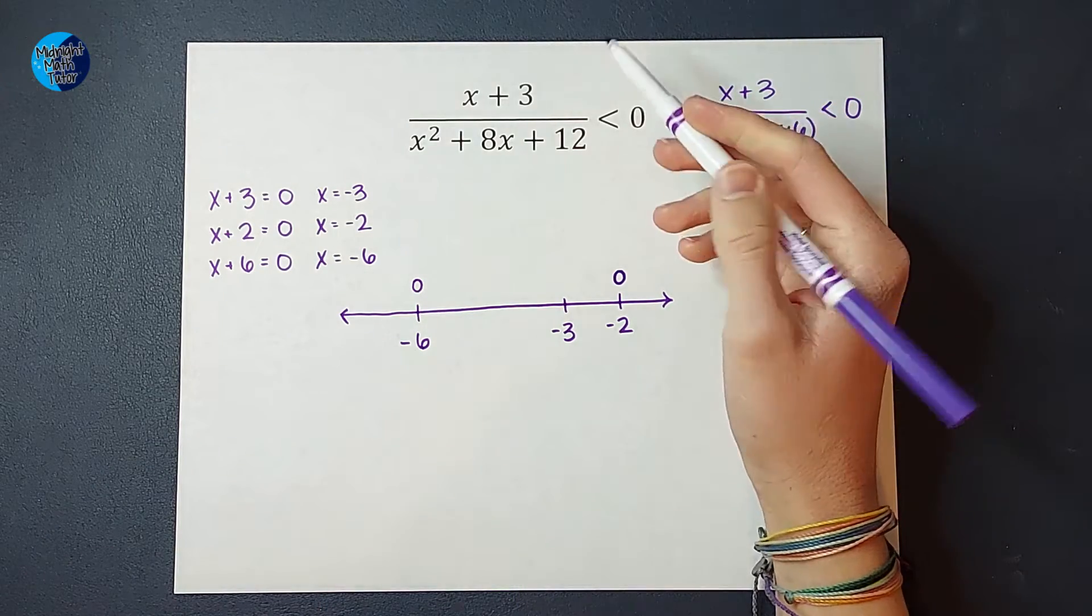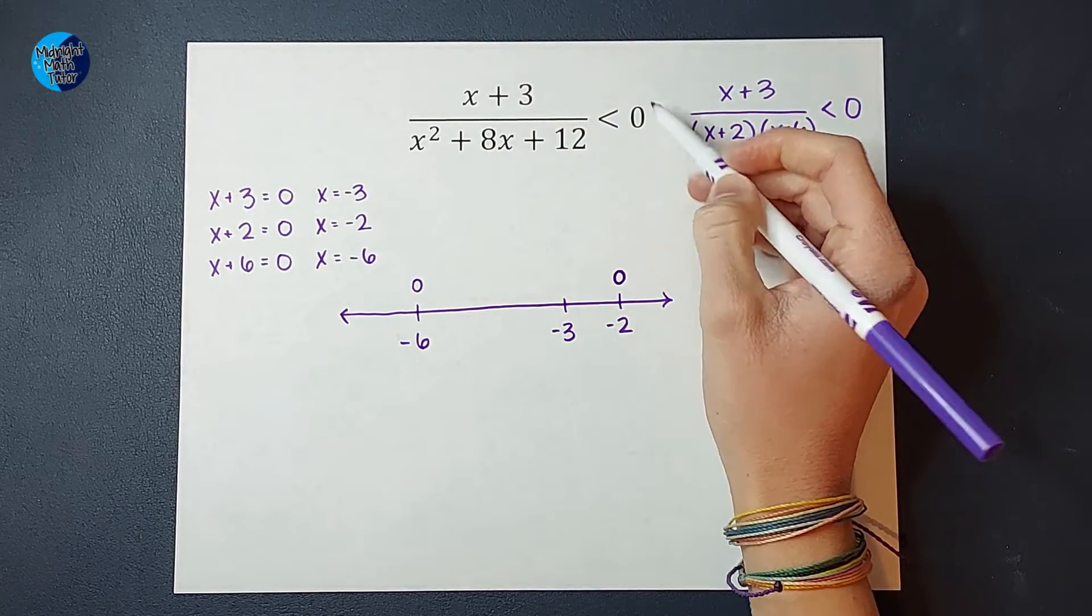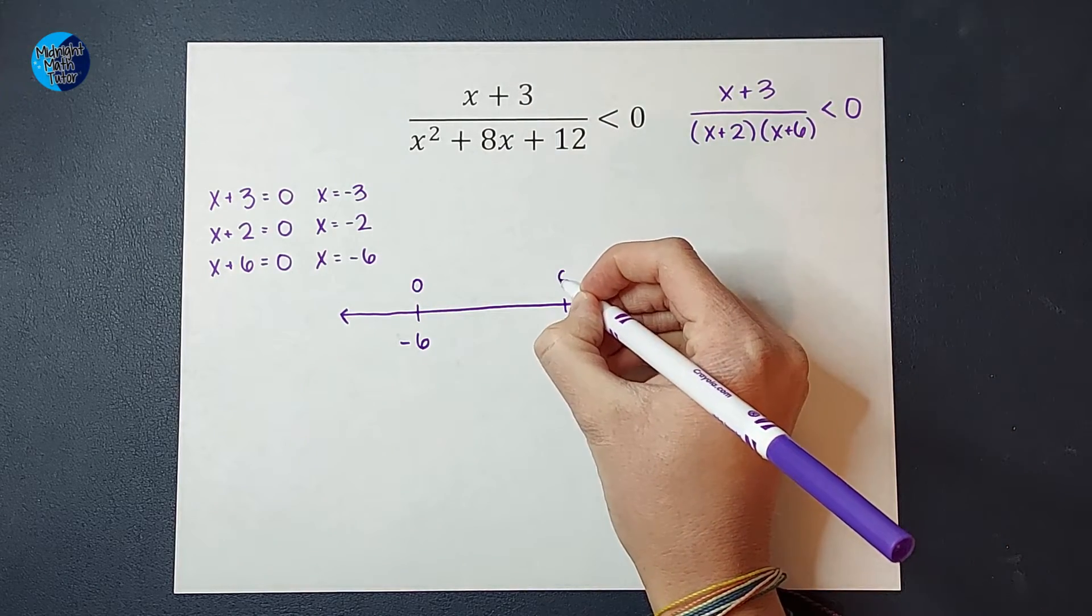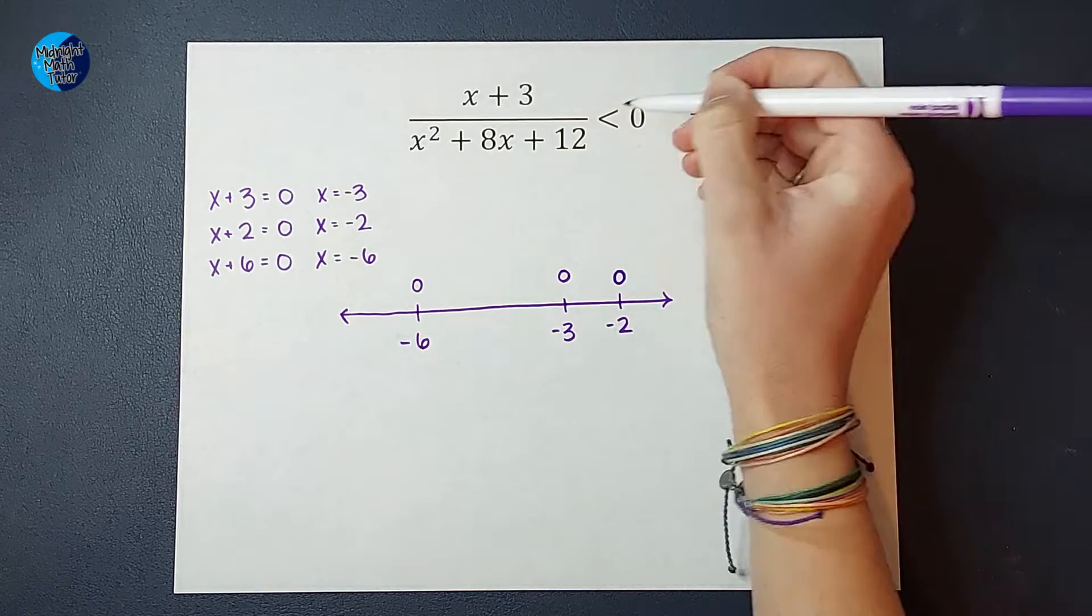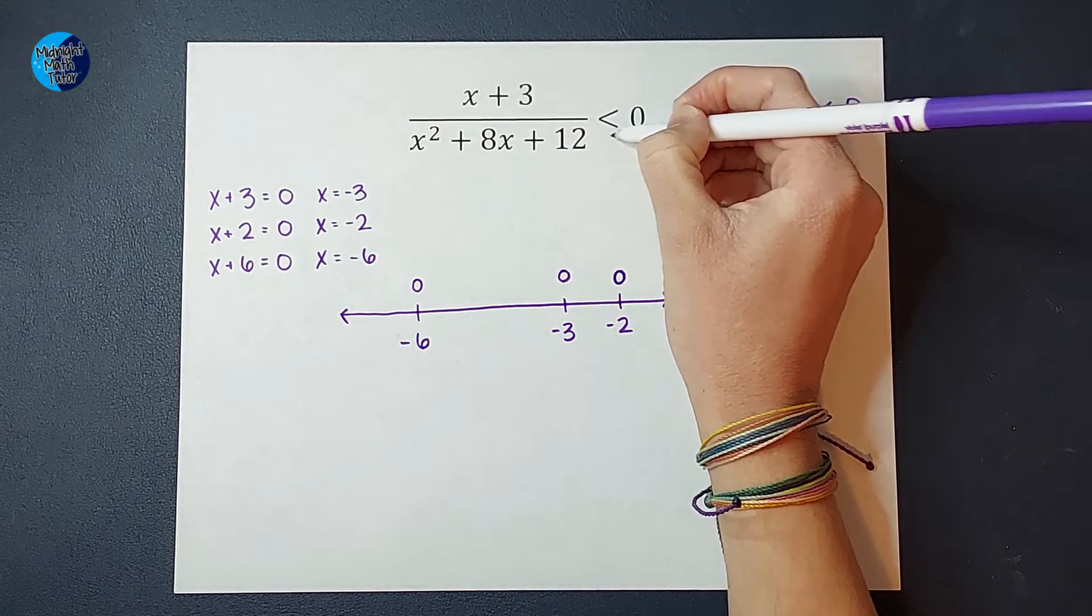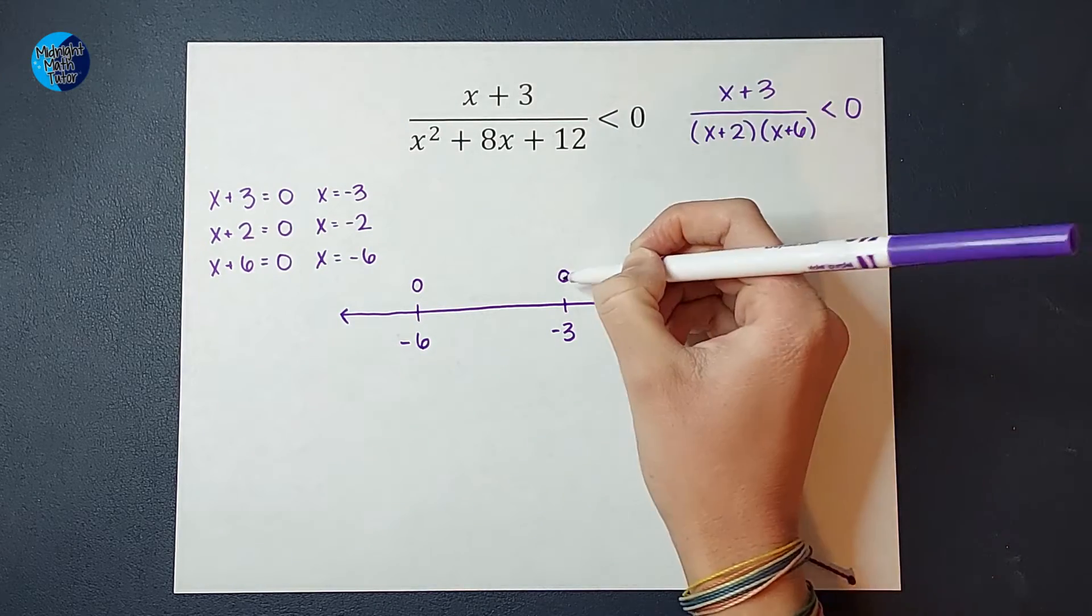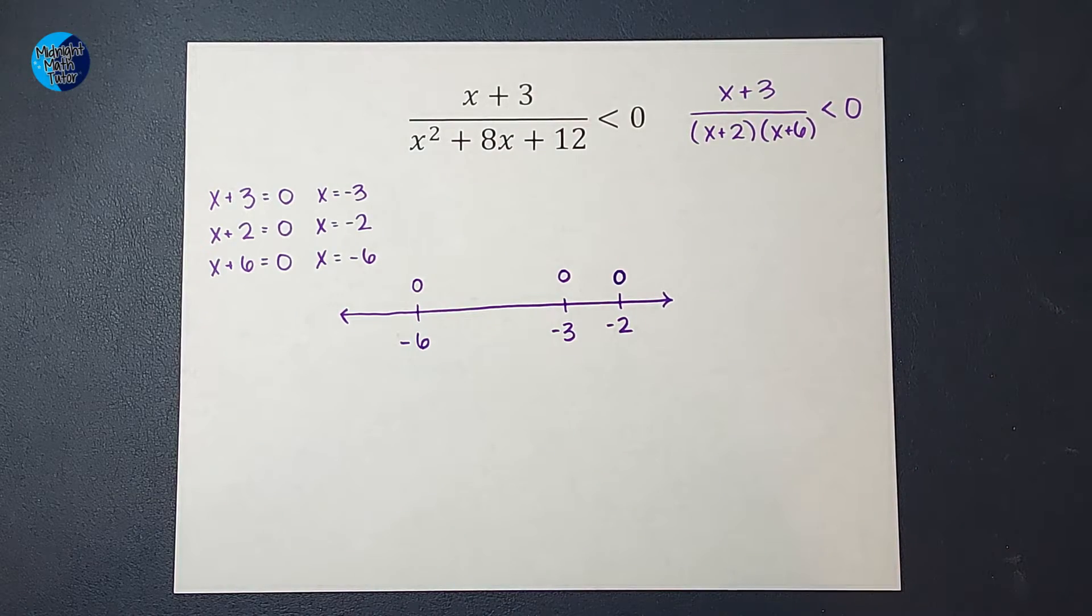But what about negative 3? Well, because we have that this is less than zero, it's going to be an open circle as well. If this happened to be less than or equal to with that line under, this would be a closed circle, okay? But for this example, it's open.